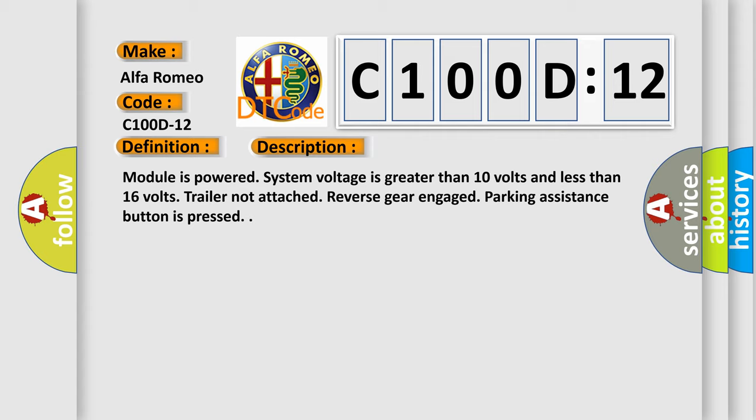Module is powered, system voltage is greater than 10 volts and less than 16 volts. Trailer not attached. Reverse gear engaged. Parking assistance button is pressed.